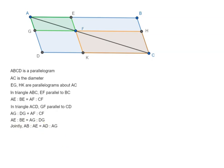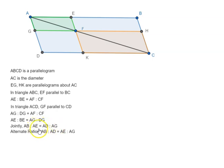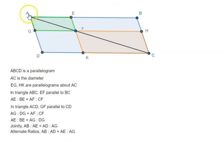And if we take the alternate ratios, this becomes AB is to AD is equal to AE is to AG. Again, all of these are based on previous propositions. So we have this proportion: AB is to AD as AE is to AG.